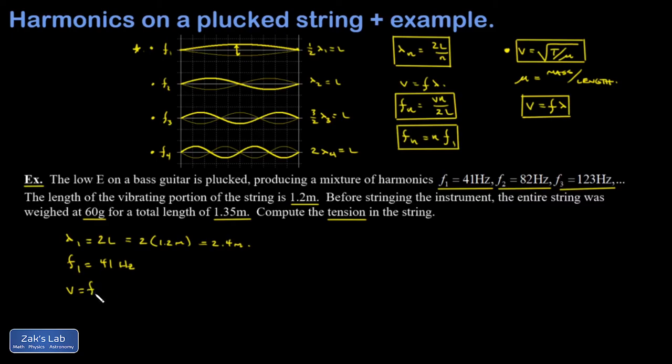So for the first harmonic, that's an F1 lambda 1. That's 41 hertz. Multiply by 2.4 meters. And I get the wave speed on my string. That gives me 98.4 meters per second.